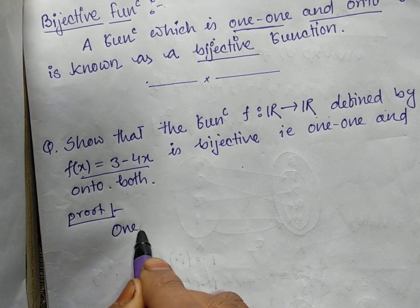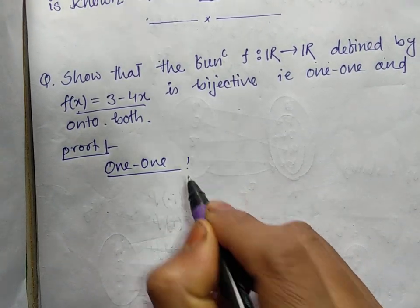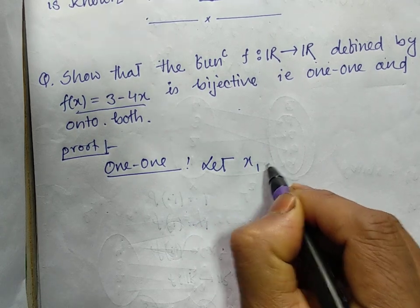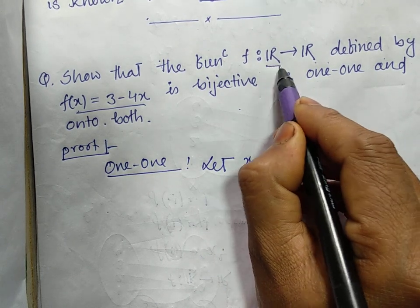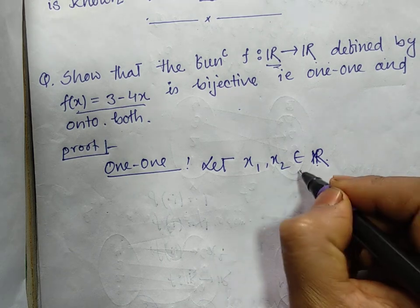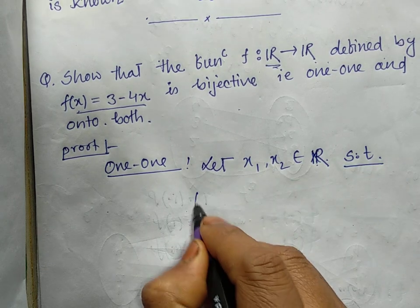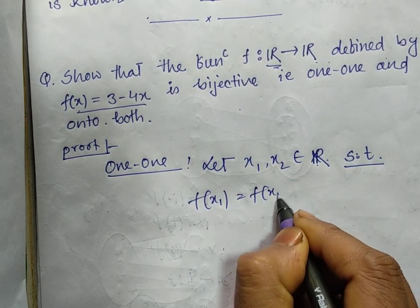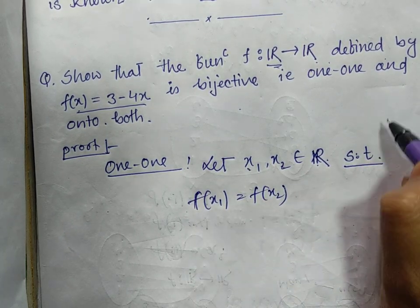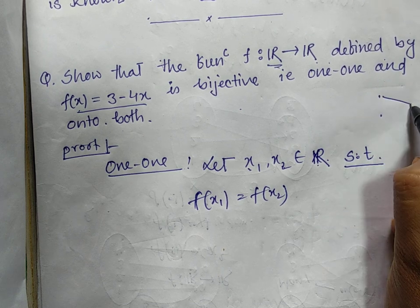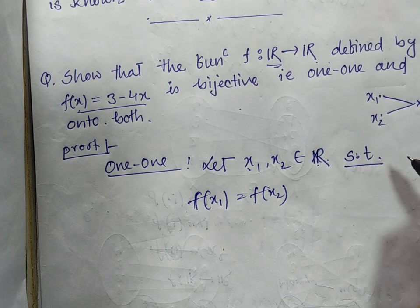First, one-one: Let x₁, x₂ belong to R, the domain or first set. What is the first set here? Real numbers. So x₁ and x₂ belong to R.